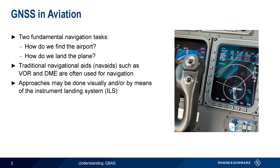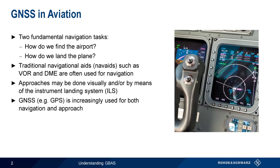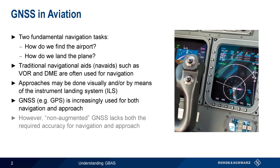VOR, DME, and ILS are very widely used, but in recent years different global navigation satellite systems, for example GPS, have been gaining in importance for both navigation and approach. However, standard non-augmented GNSS lacks the required accuracy for navigation or approach.